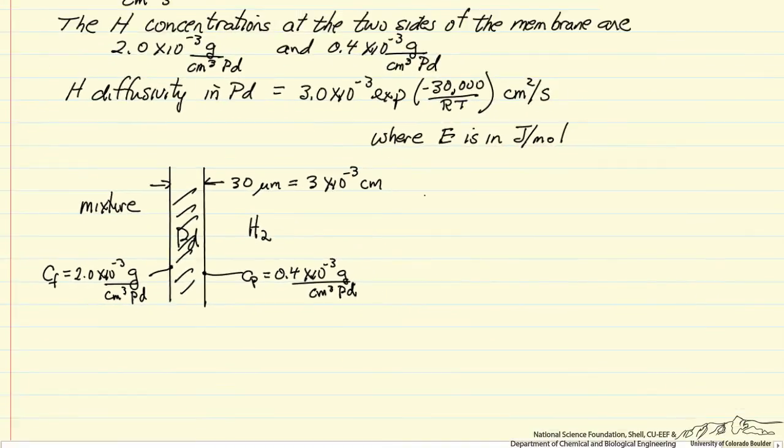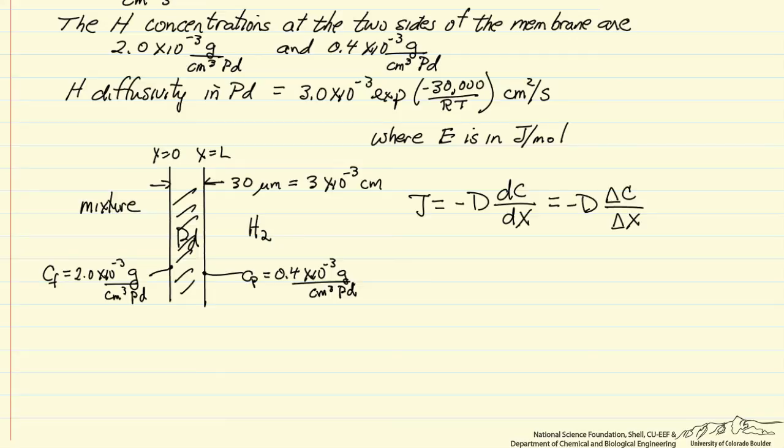So what we want to calculate now, we know the value of the flux, and the flux is related from Fick's law to the diffusivity and the change in the concentration of hydrogen with respect to distance. So I'll call this x equals 0, x equals L. Because the flux is constant, we can write this as a difference between the concentration of two sides and the thickness of the membrane.